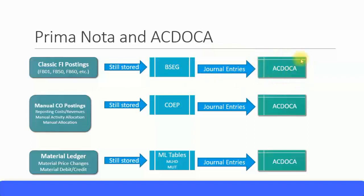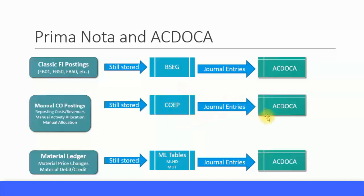So ACDOCA will be your primary source table. The prima notas are still stored in the BSEG table, but the journal entries are written in the ACDOCA table. Another type of prima nota is manual CO postings — for example, manually reposting costs or revenues using KB transactions, manual activity allocation, manual allocations, anything done manually in CO. These are also prima nota postings. They are still stored in the COEP tables — the old CO line item tables — however, the journal entries are posted in the ACDOCA table.